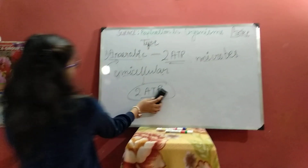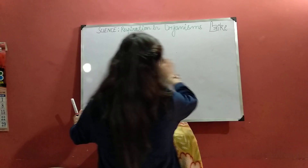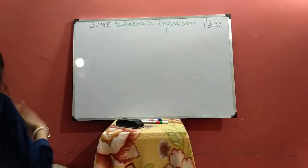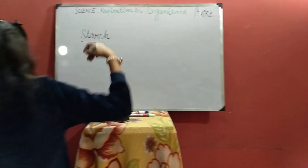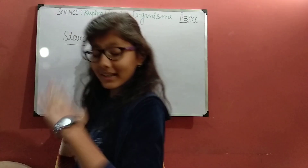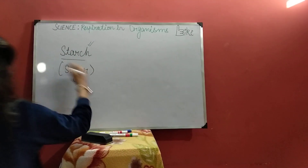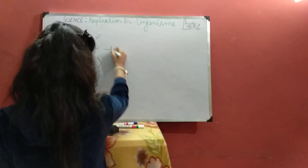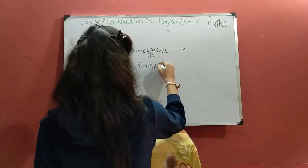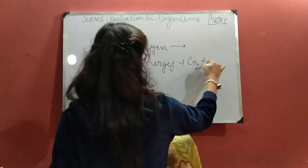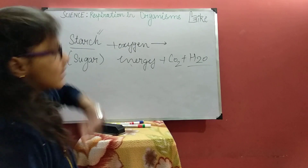Now let's learn about respiration in plants. It is very simple, similar to how we breathe, but the equation changes a little. In us, the breakdown is of glucose, but in plants, it is of starch, which is a sugar — a simple form of carbohydrate. So the equation for plants is: starch plus oxygen gives energy plus carbon dioxide plus water. This is the equation for plants.